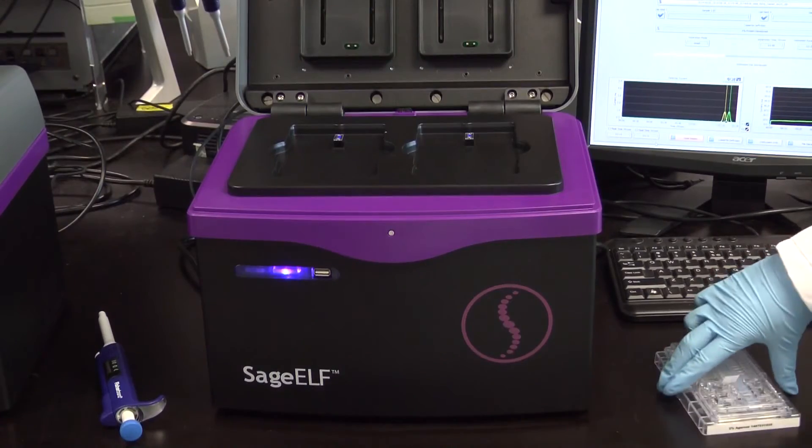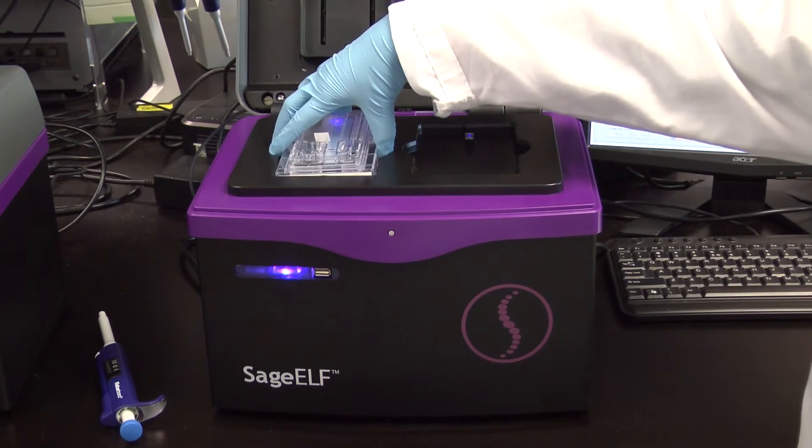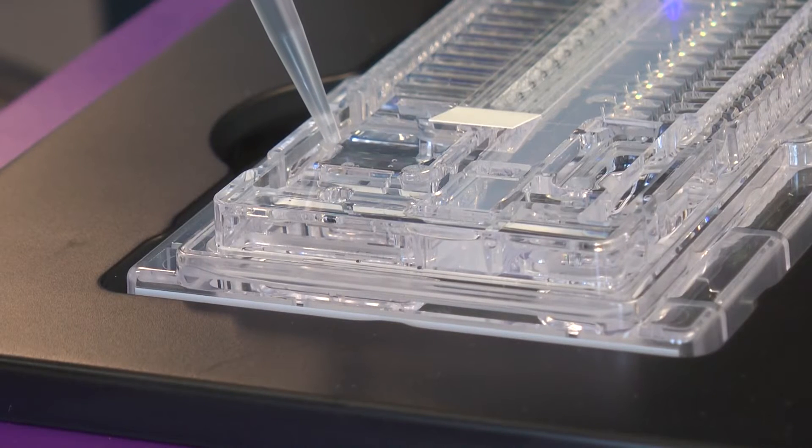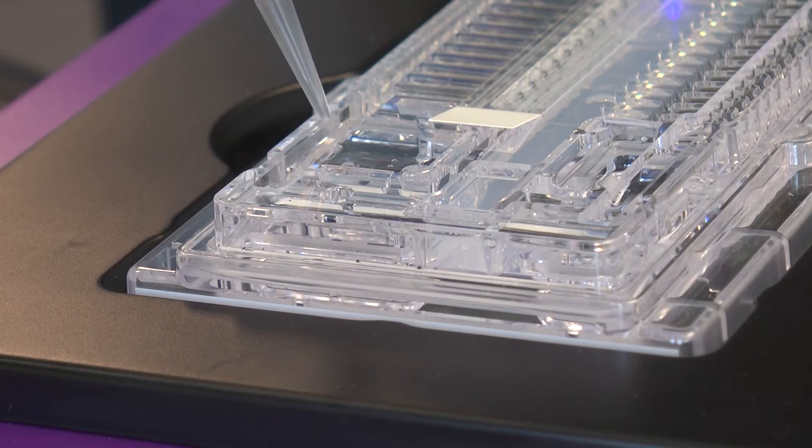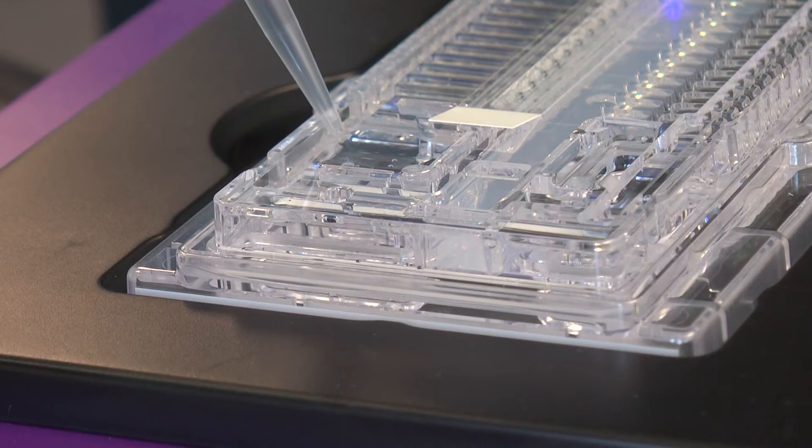Carefully move the cassette to the instrument nest while keeping it level. Top up the liquid level in the sample wells with fresh buffer. To ensure the correct current values, it is critical to fill the buffer completely up to the top of the cassette as shown here.